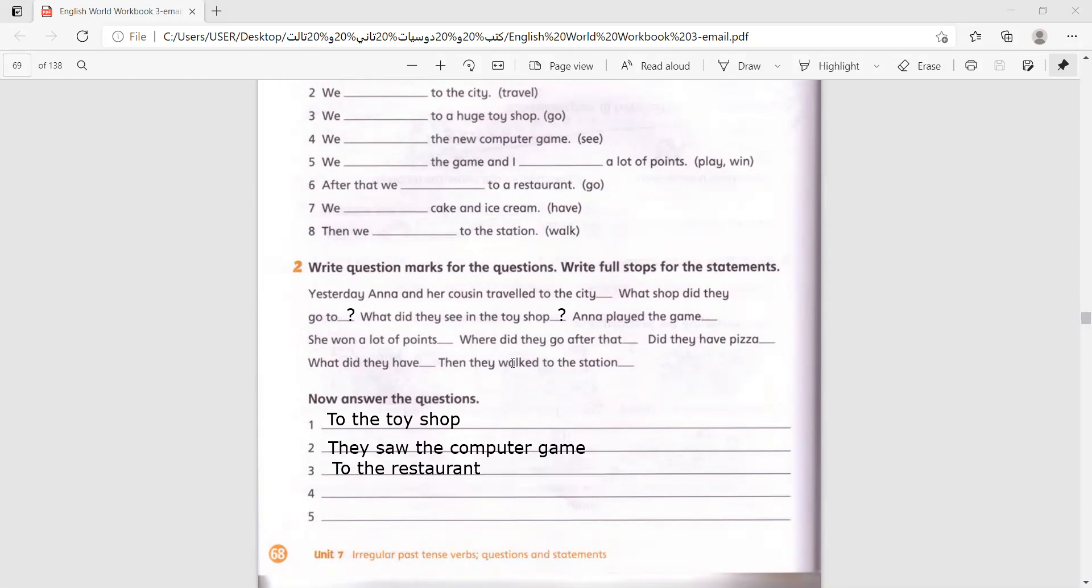Now, number four. Did they have pizza? No, they didn't. Mm-hmm. And number five. What did they have? They had cake and ice cream.